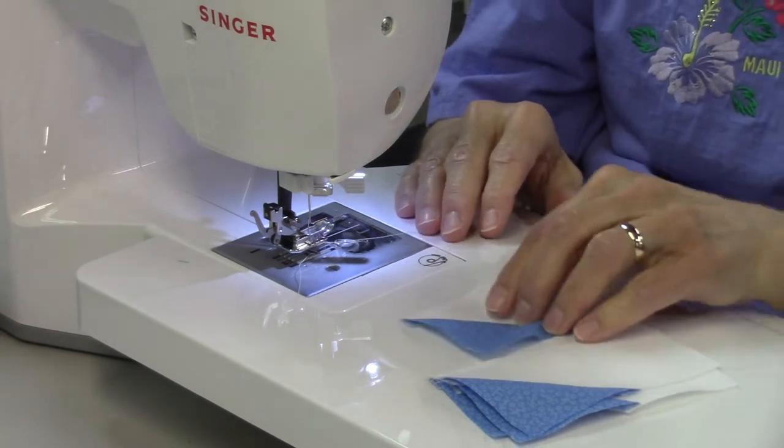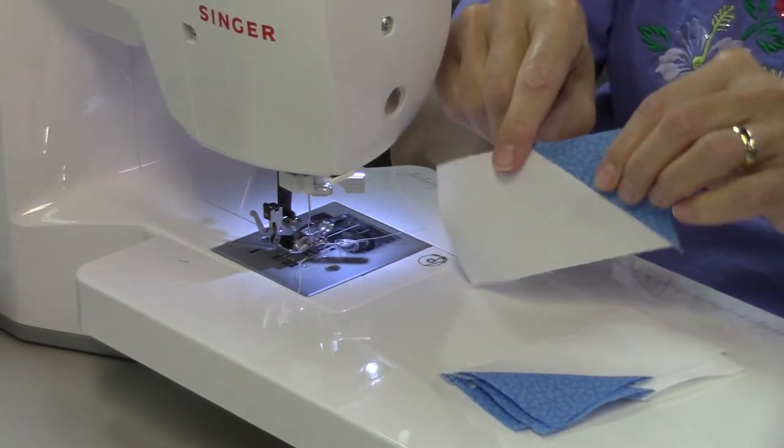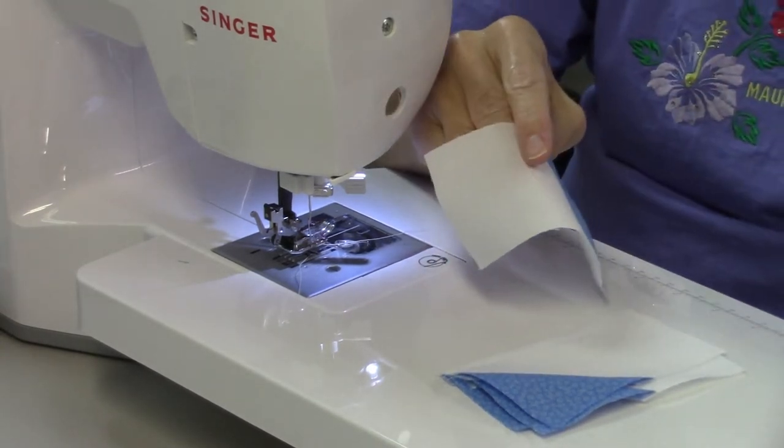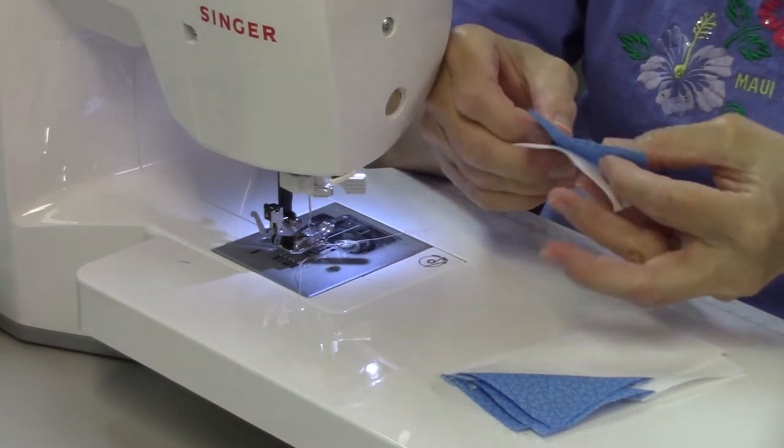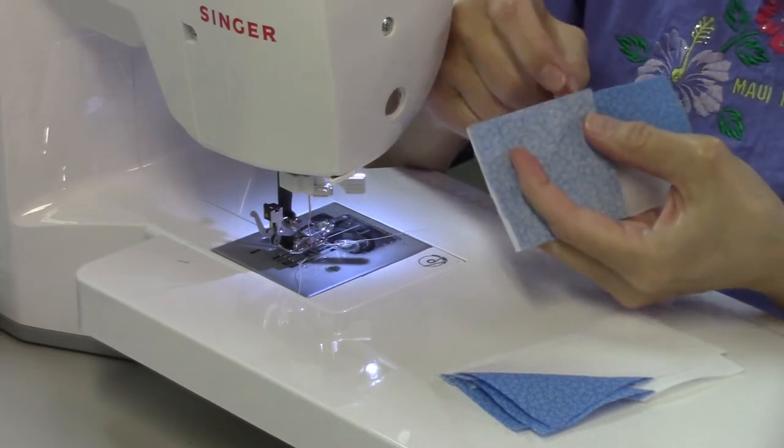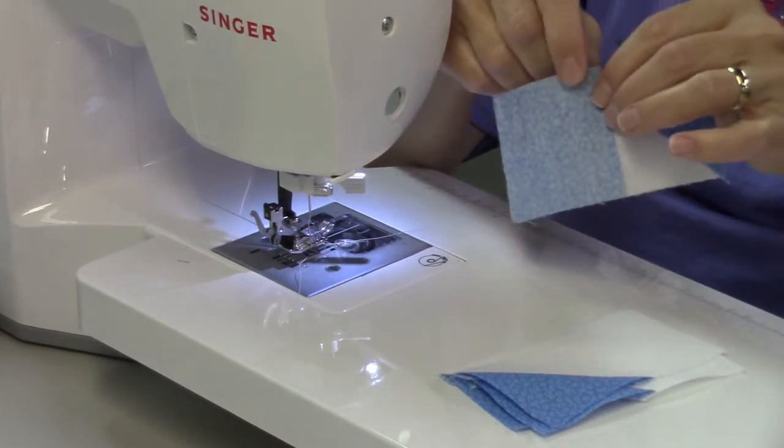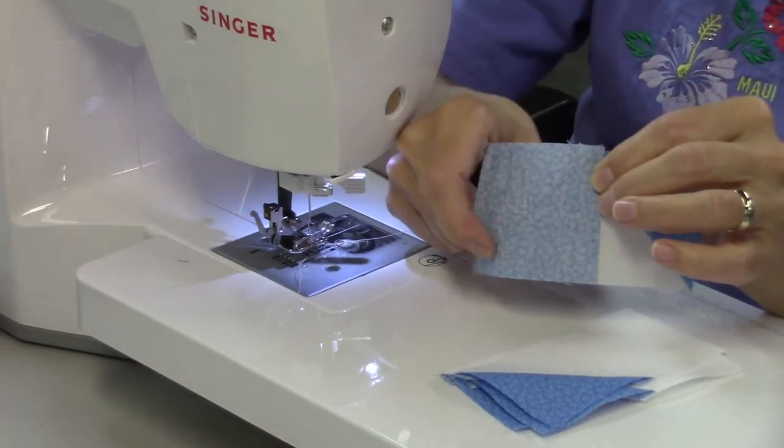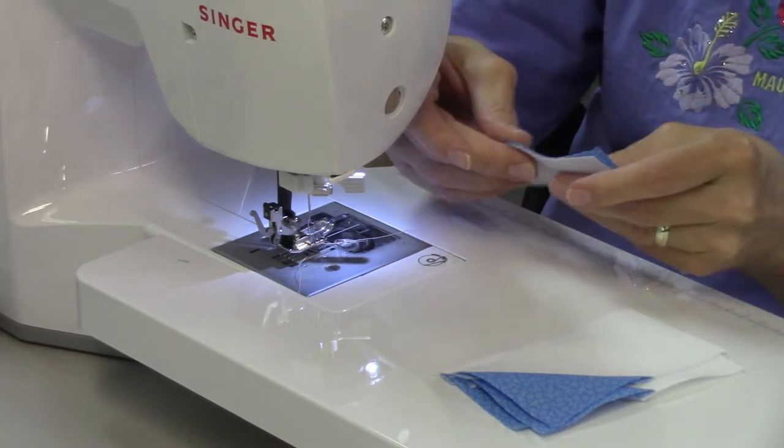Okay now I have all of my flying geese halfway done. So I'm going to take the other squares and do the same thing line them up on the outside. My diagonal line is going from the center down to the opposite corner and I'm going to sew these on.